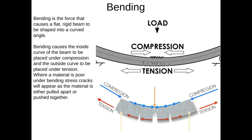The third force is bending. Bending is actually a combination of both compression and tension — it is the force that causes a flat, rigid beam to be shaped into a curved angle. Bending causes the inside of the curve, in this case the top face, to be placed under compression as it is pushed inwards, and it causes the outside of the curve to be placed under tension as that face gets pulled apart and gets longer. Where a material is poor under bending stress, cracks will appear — stress cracks where it has been pulled apart, or a concertina effect on top where it gets pushed together.